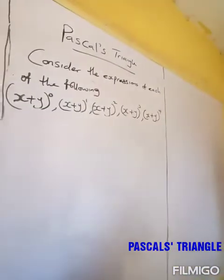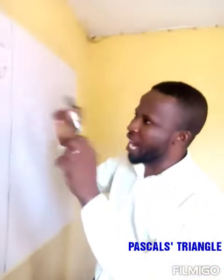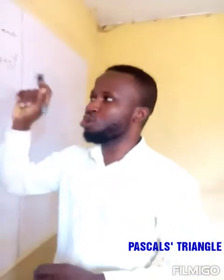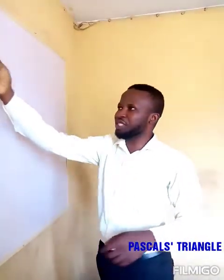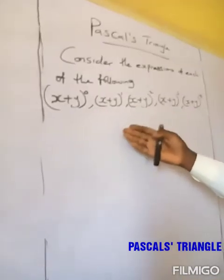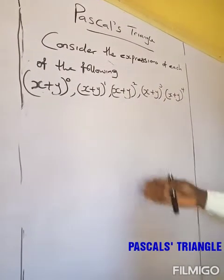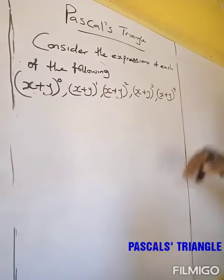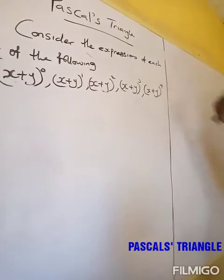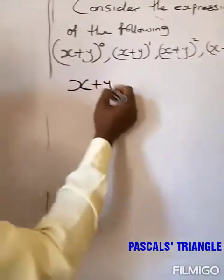In this Pascal's Triangle, I'll be showing you its triangular form, and also how we can use it to expand algebraic expressions. Consider the expression of each of the following: (s + y) raised to 0, (s + y) raised to 1, (s + y) raised to 2, (s + y) raised to 3, and (s + y) raised to 4.